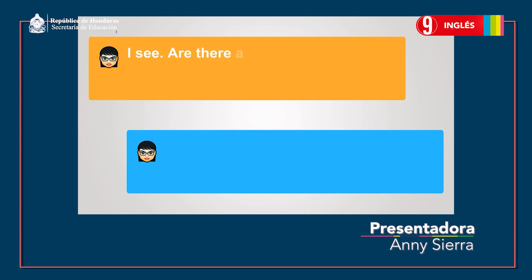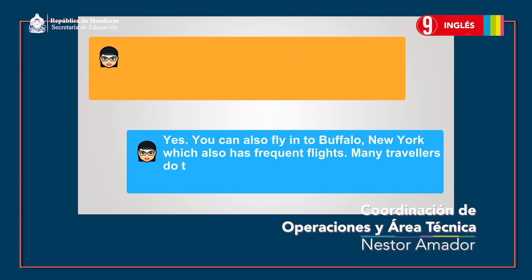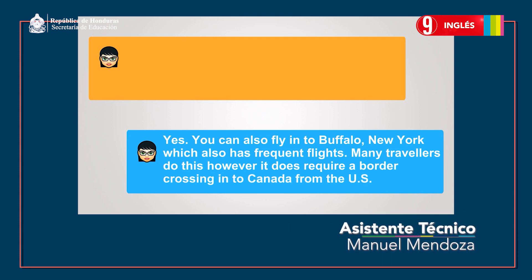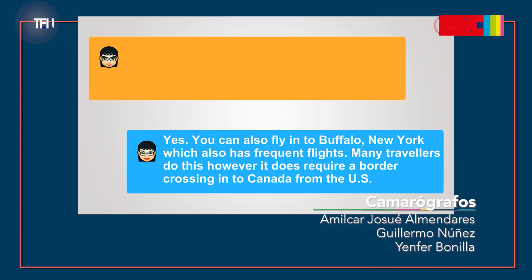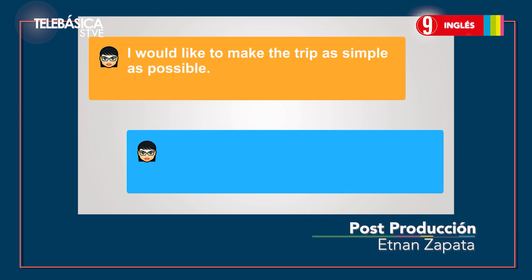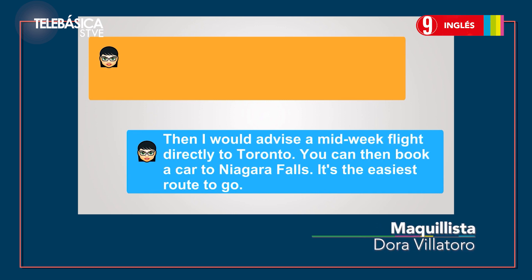I see. Are there any other flight choices? Yes, you can also fly into Buffalo, New York, which also has frequent flights. Many travelers do this, however, it does require a border crossing into Canada from the US. I would like to make the trip as simple as possible. Then I would advise a mid-week flight directly to Toronto. You can then book a car to Niagara Falls. It's the easiest route to go.